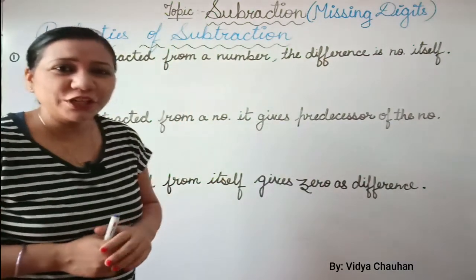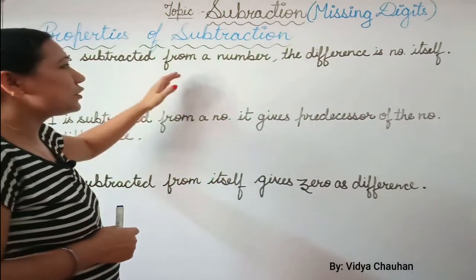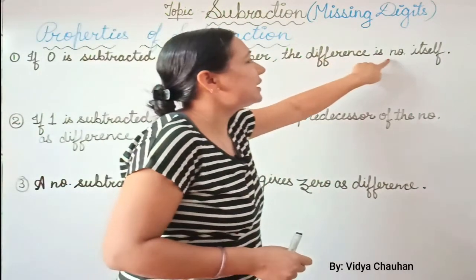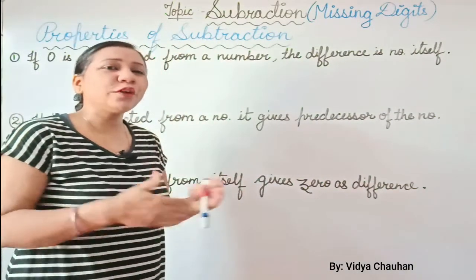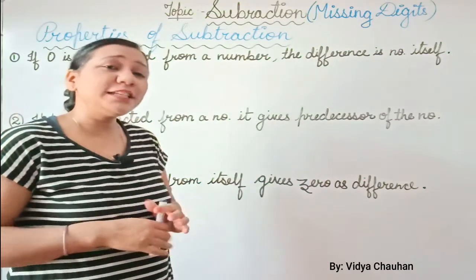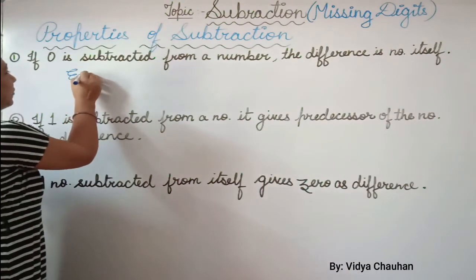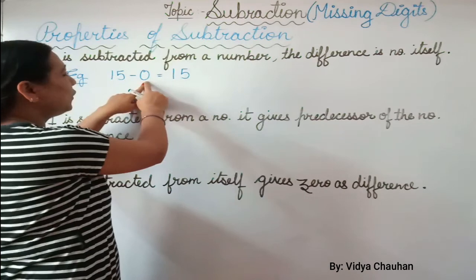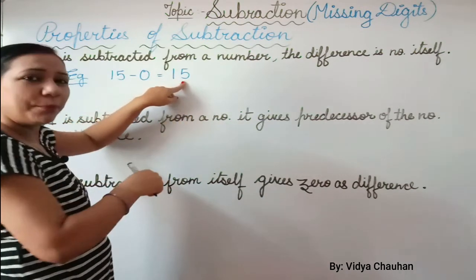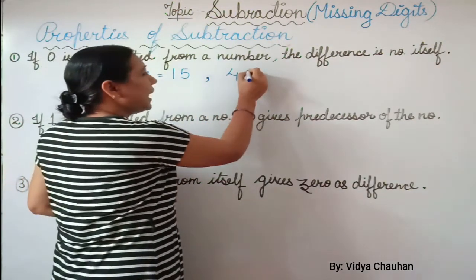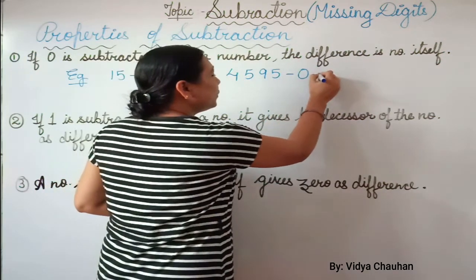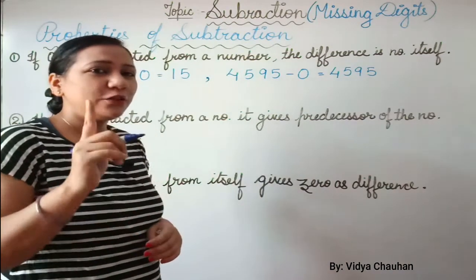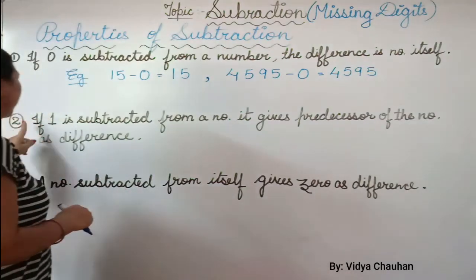Now let us start with the properties of subtraction. Just like addition, subtraction also has some properties. The first property: if zero is subtracted from a number, the difference is the number itself. For example, 15 minus 0 equals 15. The same applies for any bigger value — 4595 minus 0 equals 4595. Zero subtracted from any number gives the number itself.